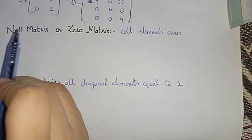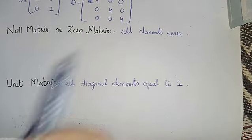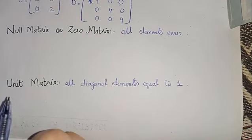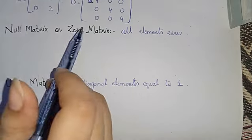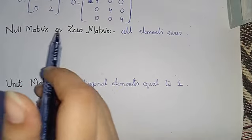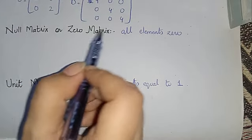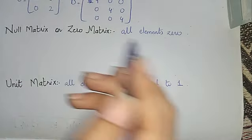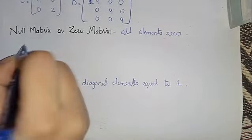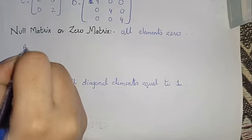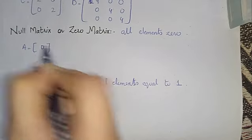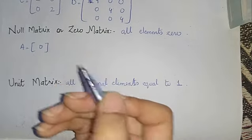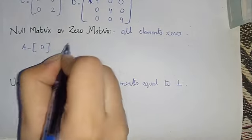Further, let's talk about null matrix, zero matrix, and unit matrix. A null matrix or zero matrix is one where all elements are zero. For example, a 2x3 matrix — we find out that every element is zero, so this is a null matrix.